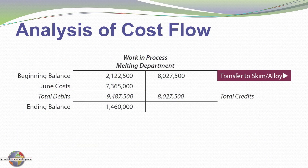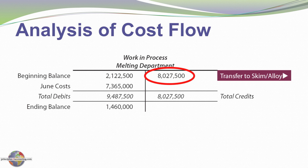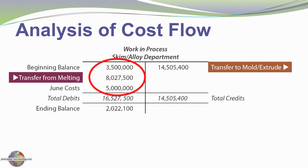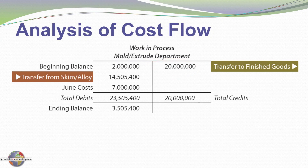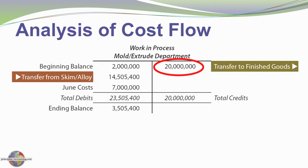Let's look at a t-account analysis of what's going on in each department. In the melting department we had a beginning balance of $2,122,500 and additional cost in June of $7,365,000. Total costs were $9,487,500, of which $8,027,500 was credited and flowed to the skim alloy department, leaving an ending balance of $1,460,000. In the skim alloy department we had a beginning balance of $3.5 million, incurred additional cost of $5 million, plus we pick up the $8,027,500 transferred from the preceding department. Then $14,505,000 was transferred on to the mold extrude department. Finally, $20 million was transferred on to finished goods — the cost assigned to completed production moving into finished goods awaiting sale.